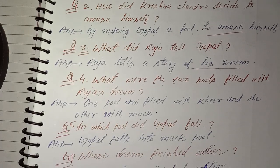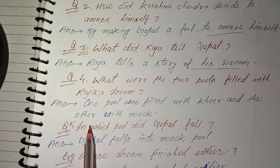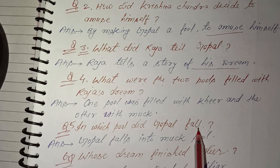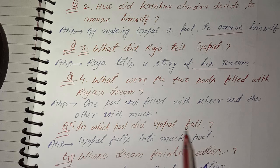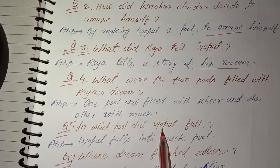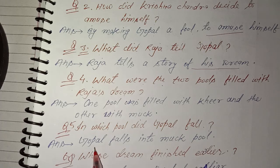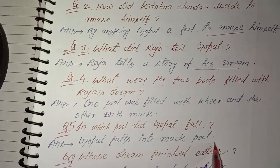Next question, number five: In which pool did Gopal fall? Gopal, who used to make everyone a fool, falls into the mud pool. Gopal mokh ke pool mein gira hua tha — Gopal falls into the mud pool.